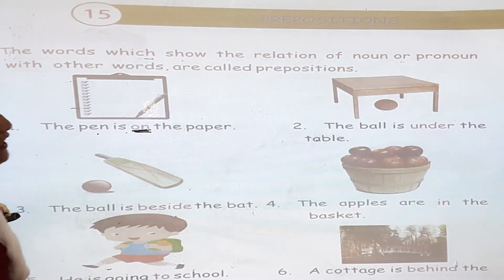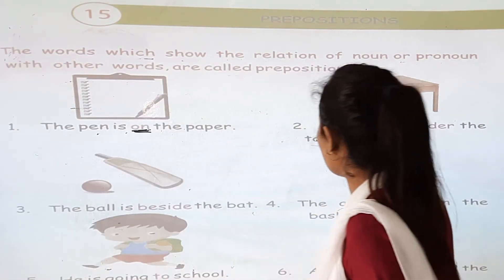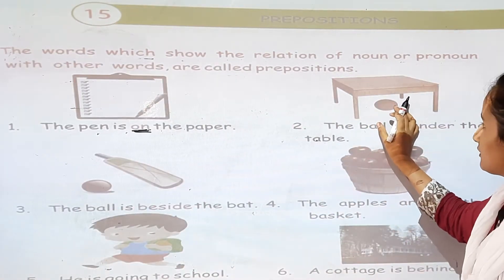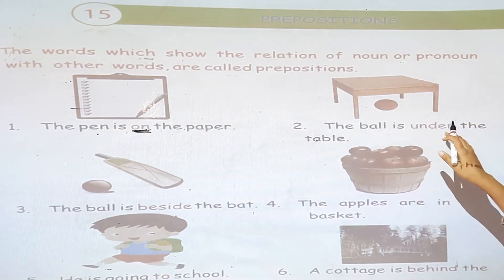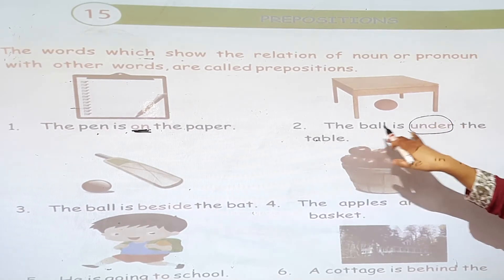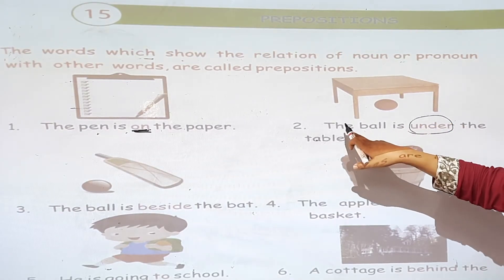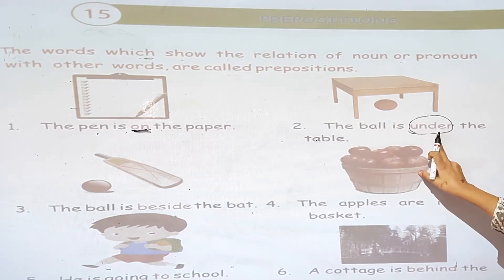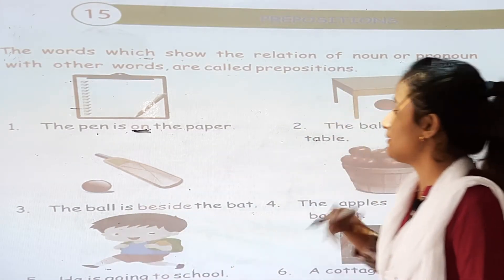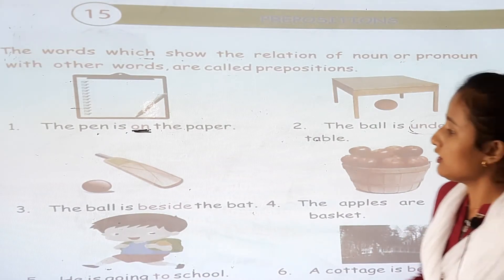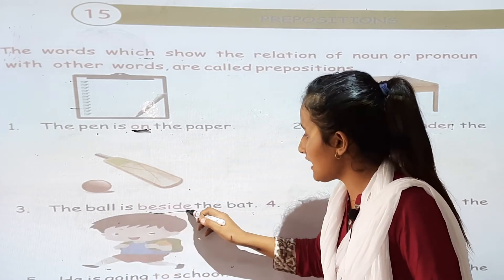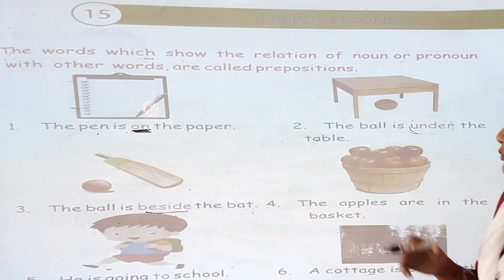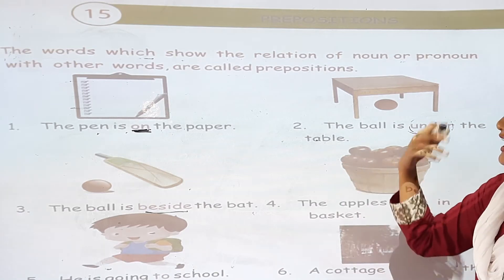For example, the ball is under the table. Ball and table are two nouns, and prepositions relate one noun to another. The ball is under the table — 'under' is a preposition. The ball is beside the table — 'beside' is also a preposition, which shows the relation between the two words.